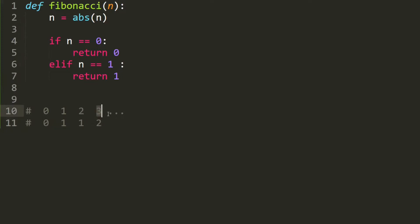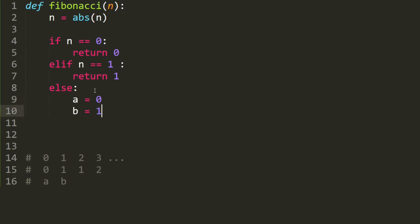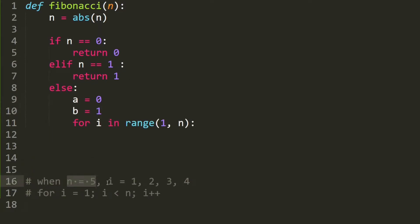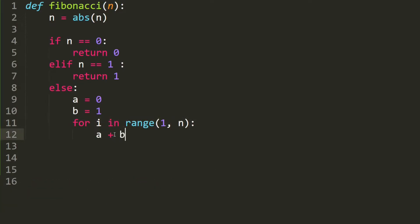What happens if they want the 2nd, 3rd, or 999th number in the Fibonacci sequence? We use a for loop. In the else branch, we initialize A to be 0 and B to be 1. In our example when n is 5, i goes 1, 2, 3, and 4. The for loop goes from i equals 1 until i is less than n, i++. We add A and B together: C equals A plus B. Then we move A and B up: A becomes B, and B becomes C. After the entire for loop, we return B, because B has the value we're looking for.